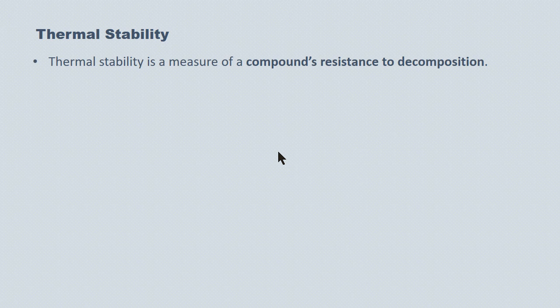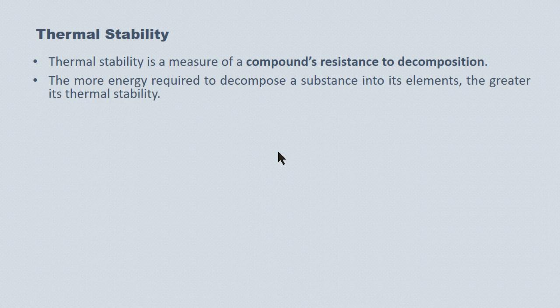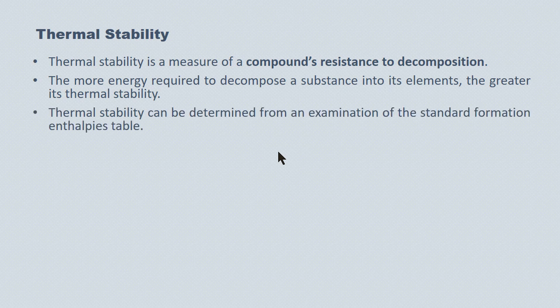By definition, thermal stability is a measure of a compound's resistance to decomposition — how much energy is required to decompose a substance back into its elements. The more energy required to decompose a substance, the greater its thermal stability. We can determine thermal stability from the standard formation enthalpy table supplied in our data booklet.